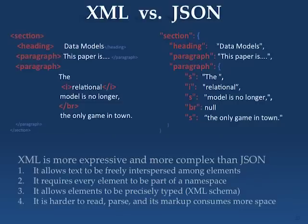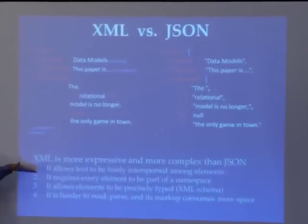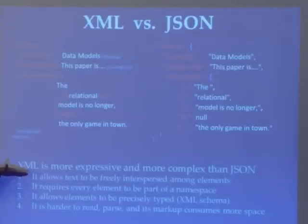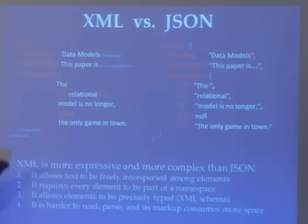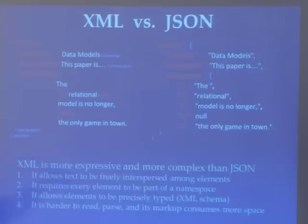XML versus JSON — they're very similar, almost identical. XML is more complicated: it allows text to be freely distributed among content without being wrapped in an element. In JSON, that's not allowed — a word has to be part of an object. XML also requires namespaces, which makes XPath a real pain. XML can be precisely typed, whereas JSON has no standard for precise typing — date types are undefined, which is not good for data integration. But XML is harder to read and parse, with more overhead. JSON is very easy and simple, and is replacing XML as a data interchange language across the enterprise.